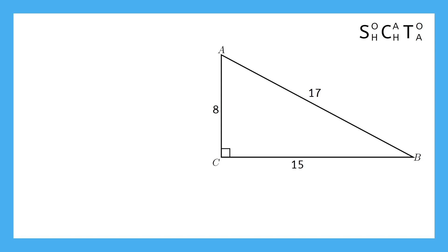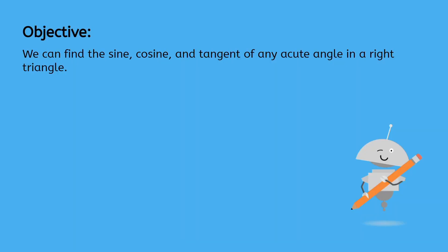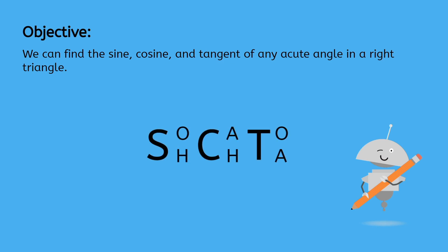Now let's complete a practice problem. Here's another right triangle. Using what we've learned, pause the video now and find the sine, cosine, and tangent of angle A. Let's check our answers. First we correctly label our sides in relation to angle A. Then we use SOH-CAH-TOA to help us remember that sine is opposite over hypotenuse, cosine is adjacent over hypotenuse, and tangent is the opposite side over the adjacent side. Now we can find the sine, cosine, and tangent of any acute angle in a right triangle. Don't forget SOH-CAH-TOA and what each of those letters stand for. See you next time!